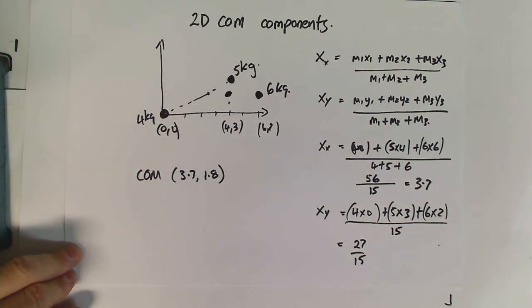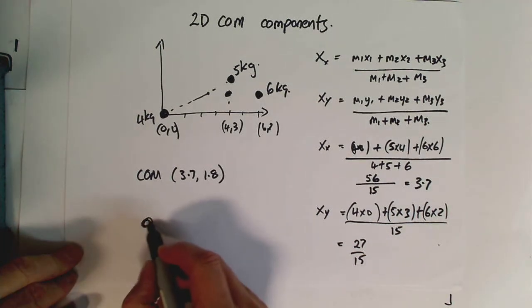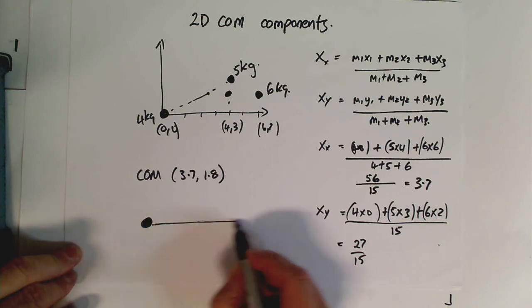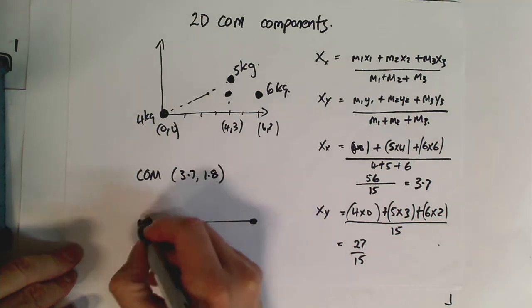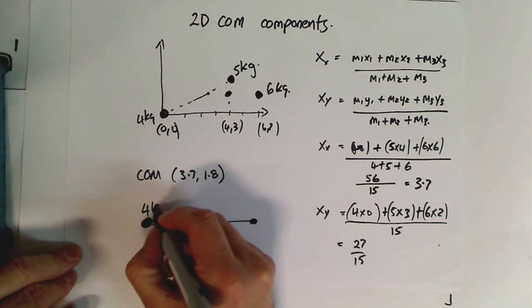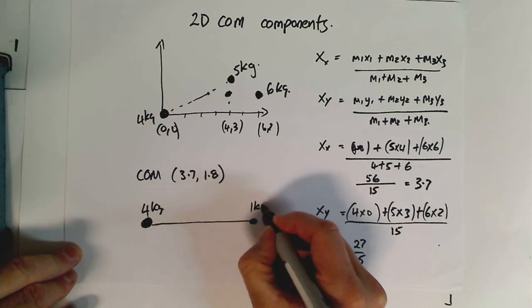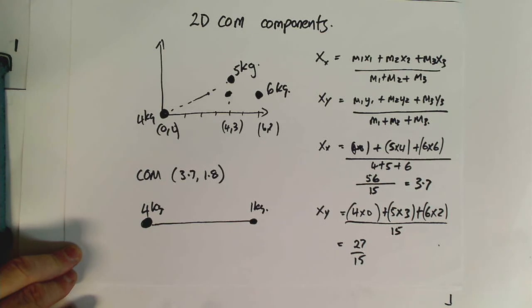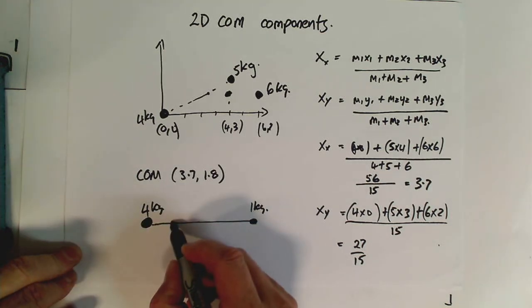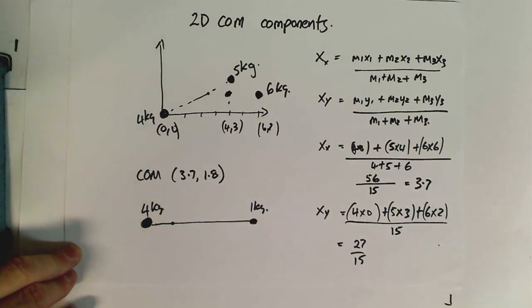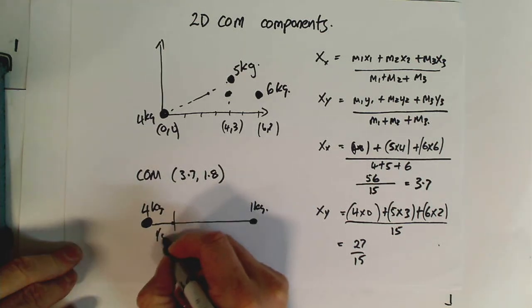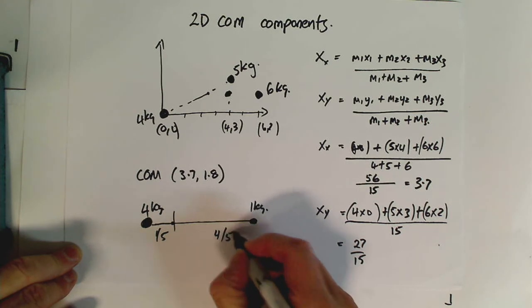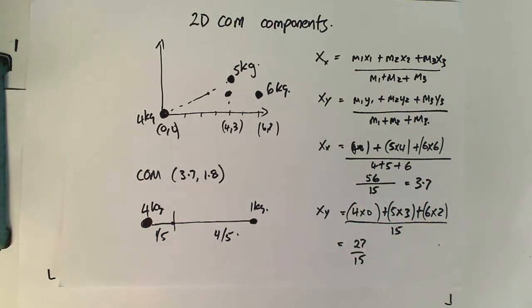Now, just while we're on this little video here, remembering that if we've got two masses like this, this is just a quick way of doing it, and we've got a mass there, if that one's maybe 4 kgs, if that one's 1 kg, then you can have 4 and 1 as 5, split this whole thing up into fifths, and we're basically going to be 1 fifth the way along there. So, if that's 1 fifth, that's 4 fifths, that's the way that works.